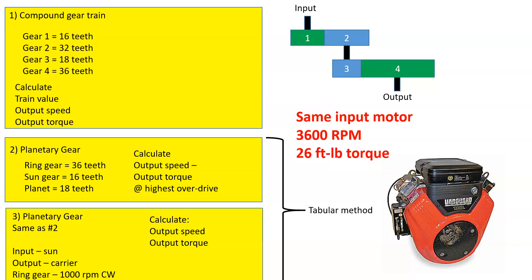So here we have three problems. One was a compound gear train. The other two were planetary gear trains, and they all had the same input motor of 3600 rpm and 26 foot-pounds of torque. For problem number one, you had to calculate the train value, the output speed, and the output torque. For problems number two and three, you had to calculate the output speed and the output torque at the highest overdrive.